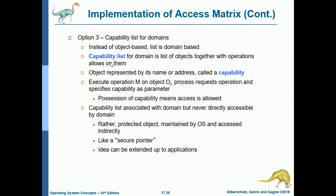Option 3 is a capability list for domains. Instead of object-based, the list is domain-based. The capability list for a domain is a list of objects together with the operations allowed on them. An object is represented by its name or address, called a capability. To execute operation M on object O_j, a process requests the operation and specifies the capability as a parameter. Possession of a capability means access is allowed. The capability list is associated with the domain but never directly accessible by the domain — rather, it is a protected object maintained by the OS, accessed indirectly, like a secure pointer.